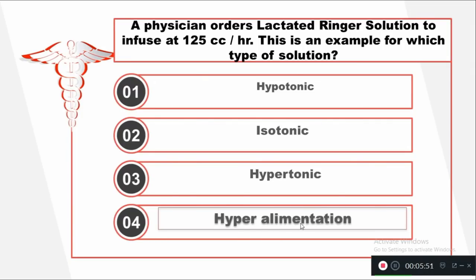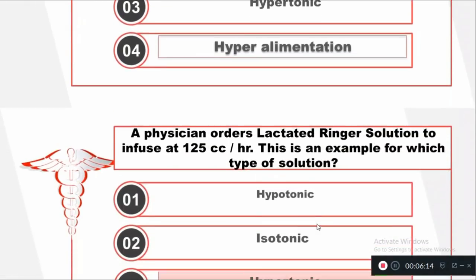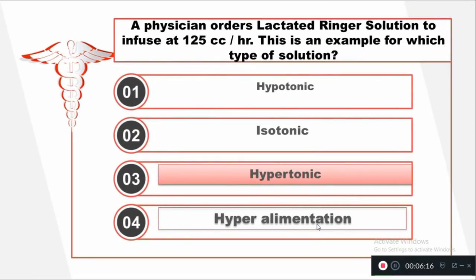Question number seven: A physician orders Lactated Ringer's solution to infuse at 125 cc per hour. This is an example of which type of solution? Option A: Hypertonic. Option B: Isotonic. Option C: Hypotonic. Option D: Hyper elimination. Lactated Ringer's solution belongs to the isotonic category.